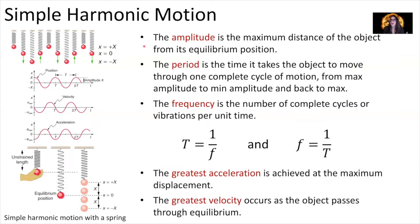When we're talking about simple harmonic motion, the amplitude is the maximum distance that the object has from its equilibrium position. So when we pull on the spring and it oscillates up and down, its amplitude is that maximum distance away from the place where the mass just hangs in equilibrium.